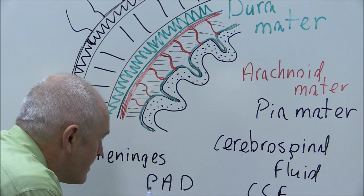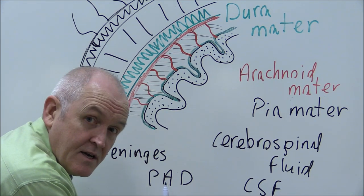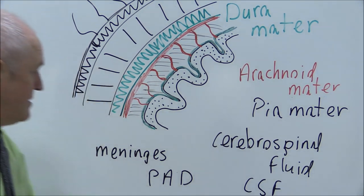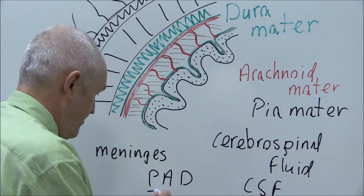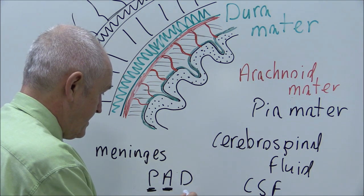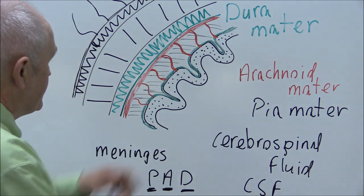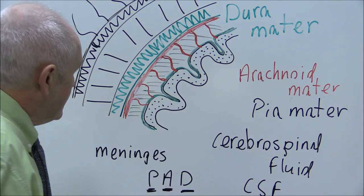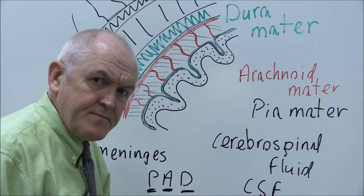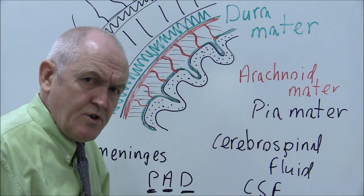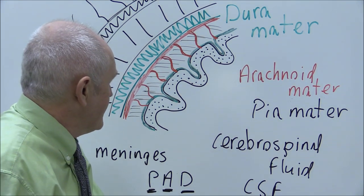Pia, arachnoid, dura. They pad the brain. Pia mater, arachnoid mater, dura mater. But the main component is the cerebrospinal fluid. Brilliant shock absorber contained in the subarachnoid space.